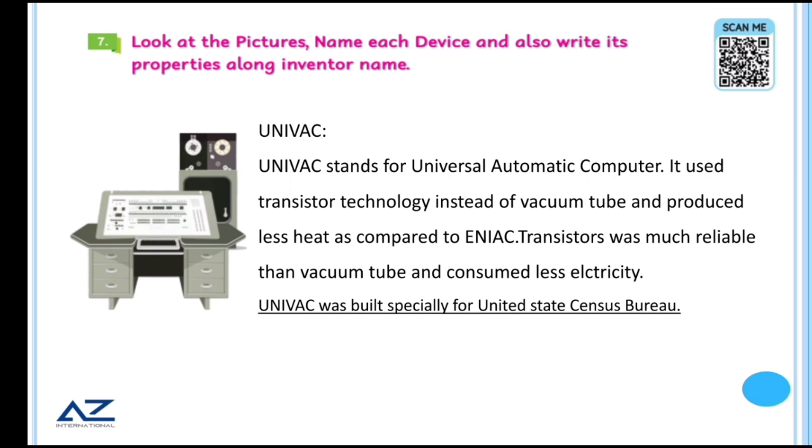Look at the pictures, name each device and also write its properties along inventor name. The first one is UNIVAC. UNIVAC stands for Universal Automatic Computer. UNIVAC used the transistor technology instead of vacuum tube. Vacuum tube size was very large. They would heat up very quickly. Air condition room was required for this. Otherwise, it will burn out. Transistors produce less heat. Transistors was much reliable than vacuum tube and consumed less electricity.